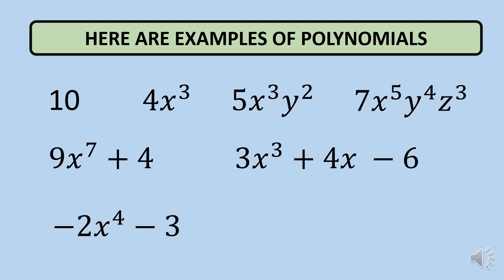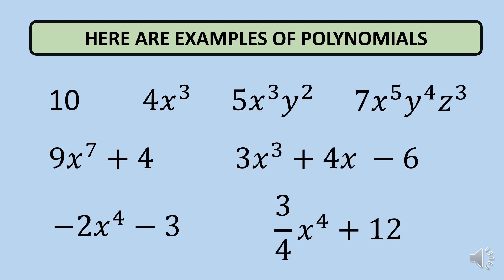Next, you have negative 2x raised to 4 minus 3. You might wonder about the negative, but that negative belongs to the numerical coefficient, which is negative 2. What we always look at are the exponents — they should be positive. In this example, 4 is positive and it is a whole number, so this is still a polynomial. Next, you have 3 fourths x raised to 4 plus 12. The numerical coefficient is in fraction form, but for our variable x, the exponent is still a whole number and a positive exponent. Therefore, this is still a polynomial.